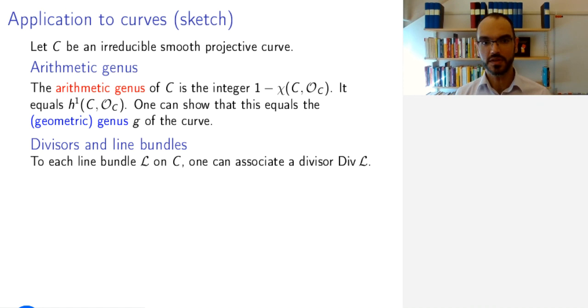Moving on, if we have a line bundle L on C, we can associate a divisor to it. We have done this. We did this for elements of the cotangent bundle of C, where we associated a divisor, namely the divisor of zeros and poles of this one form. And one can do a similar thing for line bundles.